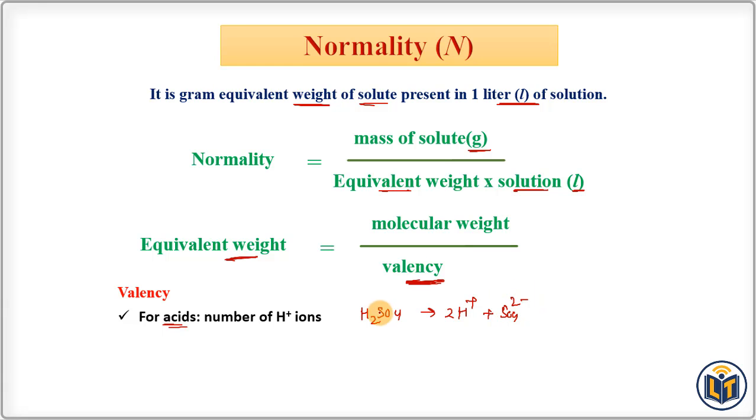For bases we count the number of hydroxide ions. Let's say I have KOH and it is having only one hydroxide ion, then valency for this compound, for this base, will be one.